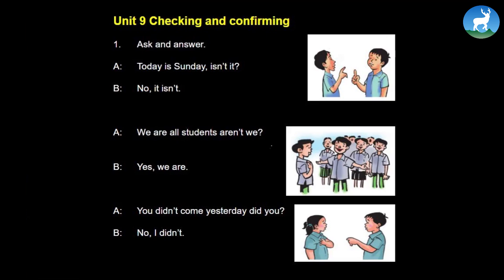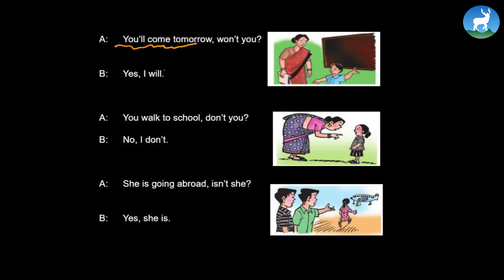I want you to observe the picture. Checking and confirming, ask and answer. Observe the picture first. Now we read. Today is Sunday, isn't it? Positive statement, negative question tag. No, it isn't. Similarly, we are all students, aren't we? Look at the auxiliary here. Yes, we are. You didn't come yesterday, did you? No, I didn't. You'll come tomorrow, won't you? Yes, I will. You walk to school, don't you? No, I don't. Singh is going abroad, isn't he? Yes, he is. These are all question tag rules here that follow.